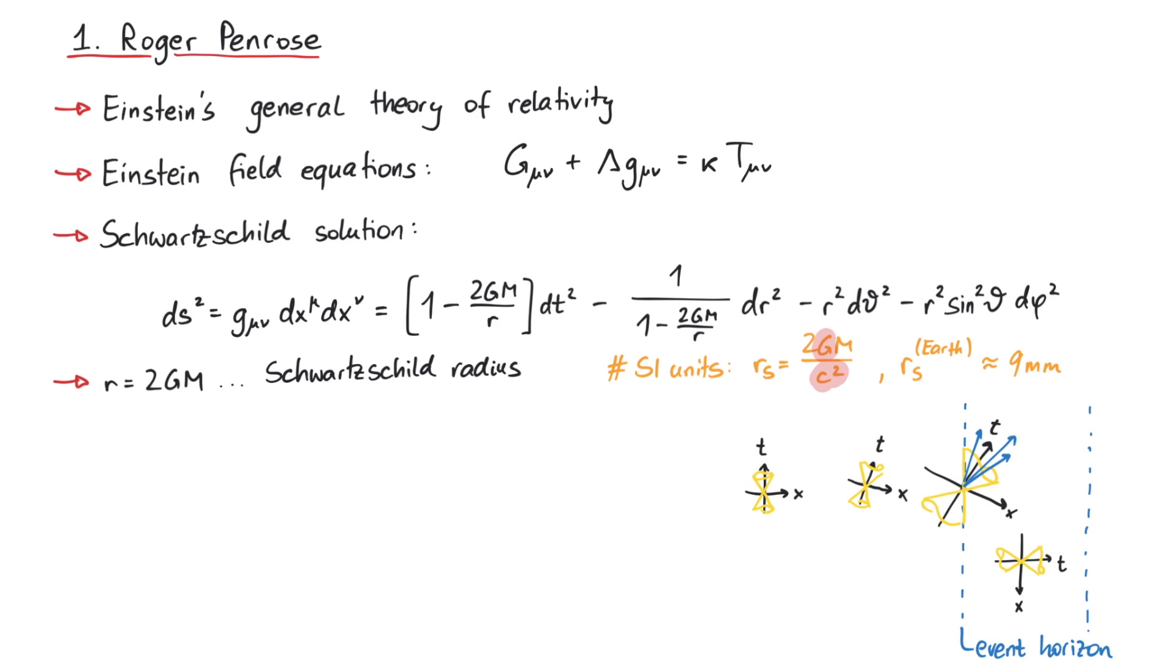The second interesting point occurs at r equals zero. Here, the coefficient in front of the dt² diverges, and the one in front of dr² gets zero. This point represents the center of the black hole and is called a singularity. By the way, such a singularity not only appears in the Schwarzschild solution, but also in many other solutions of the Einstein equations.